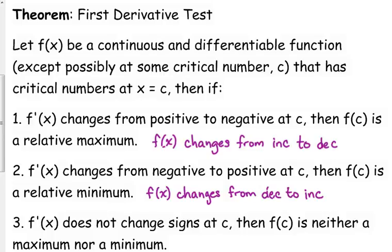Sometimes the derivative does not change signs at your critical numbers. Then that critical number is neither a minimum nor a maximum — something else happens. We're going to get the second derivative test within the next couple of days to find out what happens when it doesn't change signs. There was an example on the review sheet where the derivative was zero at a point, but the function was increasing and then continued increasing — so it wasn't a maximum.